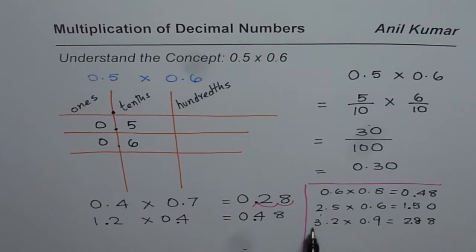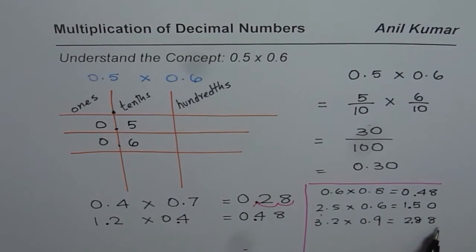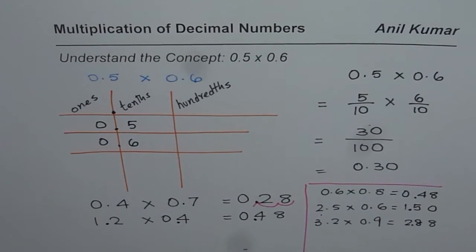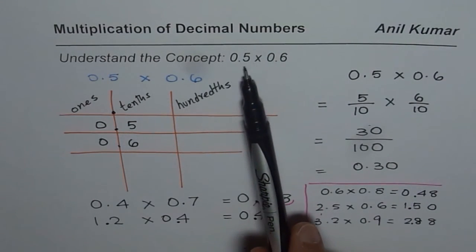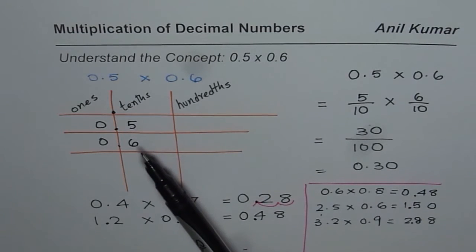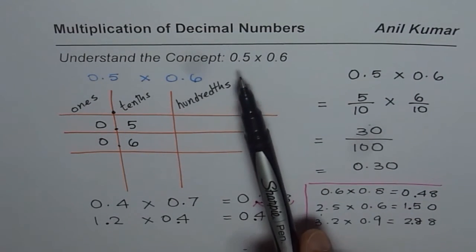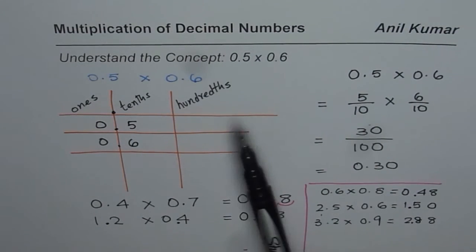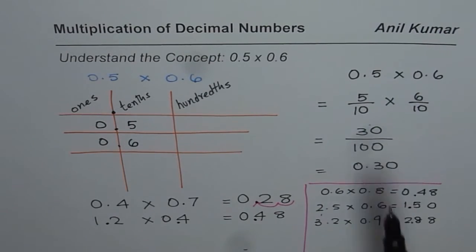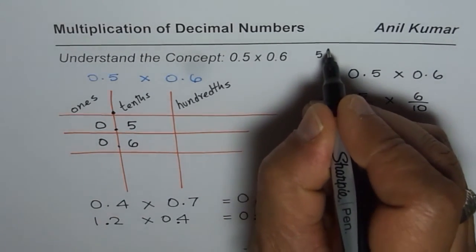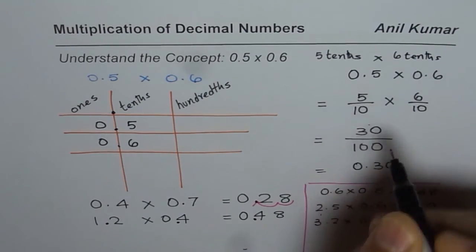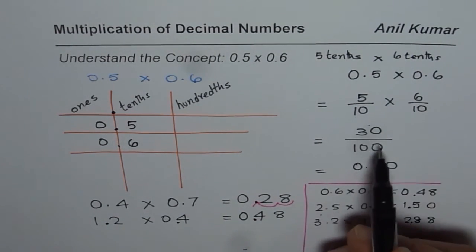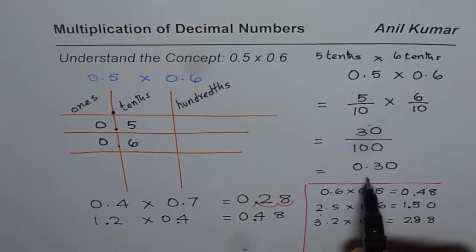But I hope the technique is just multiply numbers as such and then place decimal is a good technique to learn. So in this particular video what you learn here is how to write the decimal numbers so you understand the concept that the numbers after decimals will be tenths or hundredths. When you multiply you could actually write these numbers in place value form which is 5 tenths times 6 tenths, 5 out of 10 times 6 out of 10.